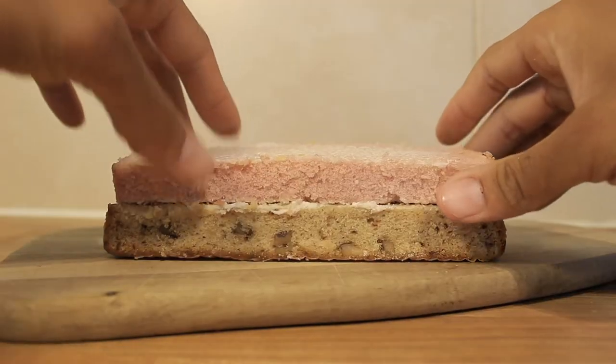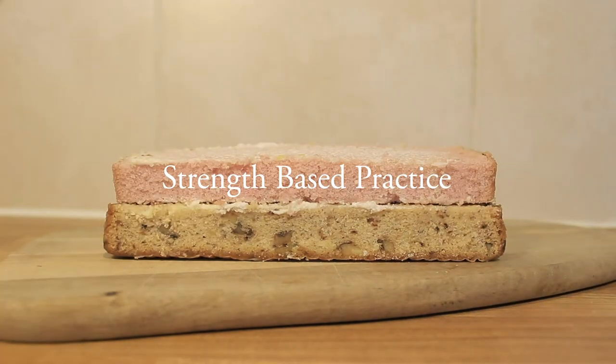Layer number two of the cake moves from having that good life vision towards how do we work with people. This draws from strengths-based practice — the concept that every individual we work with will come with certain strengths. In strengths-based practice we're not only recognising and appreciating those strengths, but also working with an individual to develop their wider strengths and to harness those in their lives.